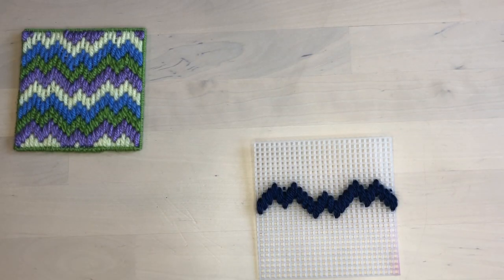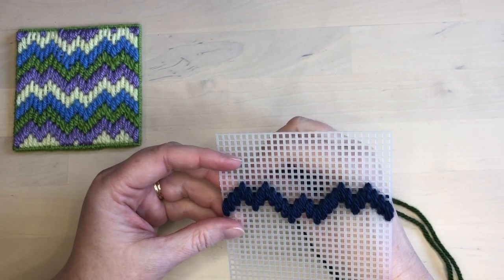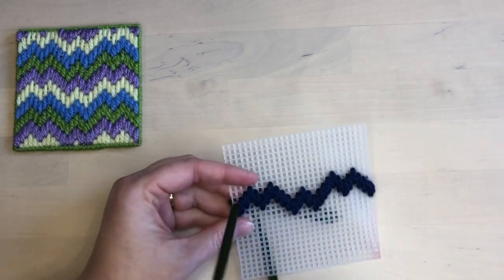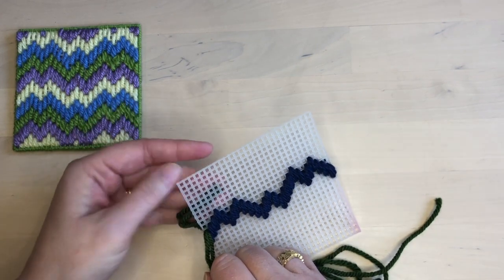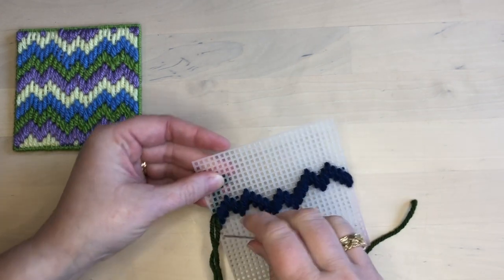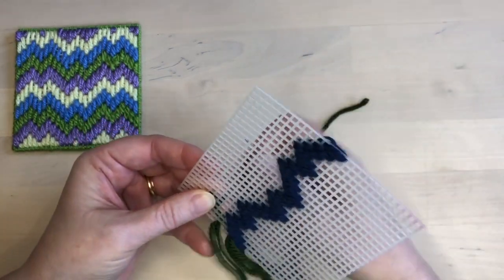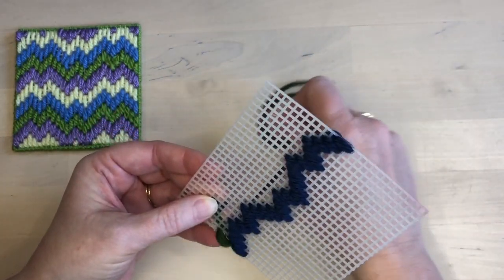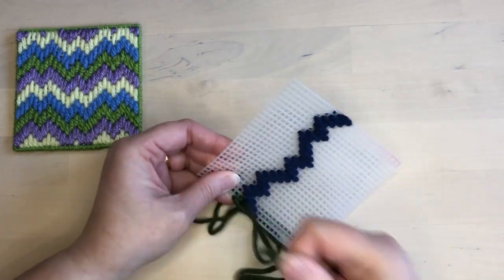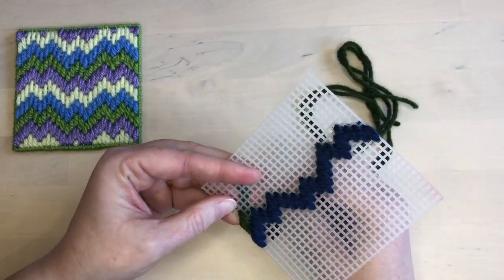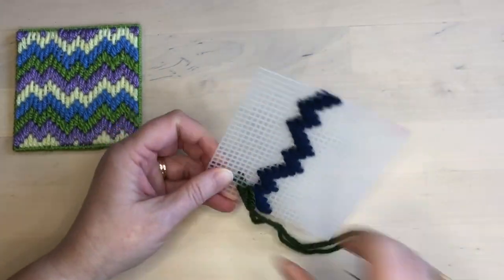And here's the full row. All the rest of the rows will be stitched following this base row as a reference. So we can just start on one end and stitch across to the other end. To secure the end of this thread I'm just holding it on the back and then doing my stitches over top of it so that the end is woven in automatically. Stitch all the stitches in this row following the base row as a guide.